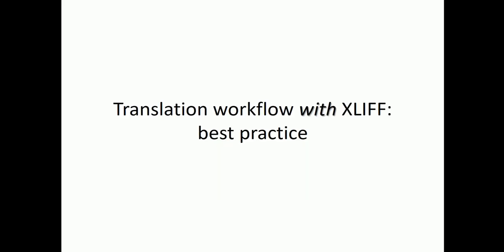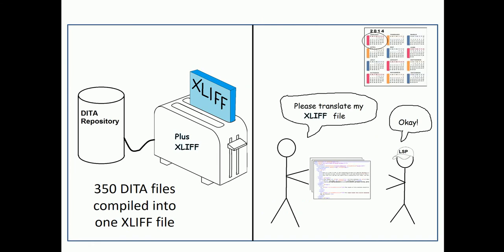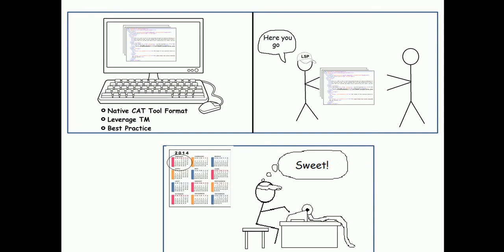So what is the best practice? The best practice is to translate DITA via XLIF. The strategy is to take advantage of DITA's map files to manage the many topic files. We create an XSLT to read the map file and convert each referenced file into a single XLIF file. The 350 files are compiled into one XLIF file, which we hand to the localization service provider. Since XLIF is the native CAT tool format, they can leverage their translation memory and best practices, hand us back the translated XLIF file, and we've saved time, money, and improved accuracy.